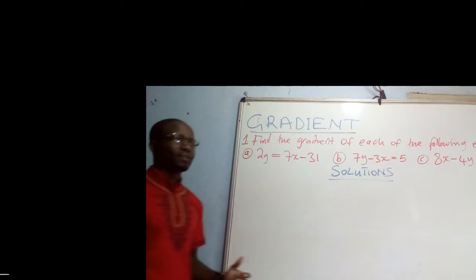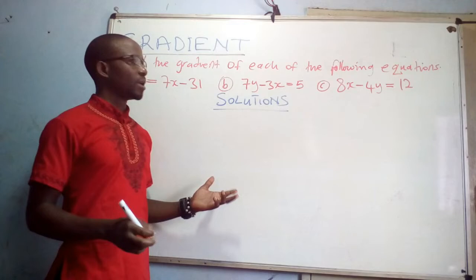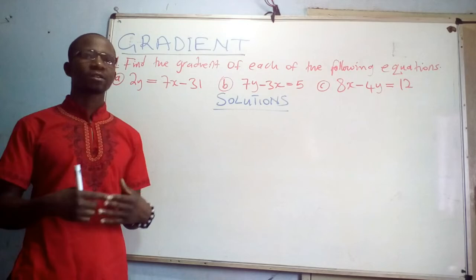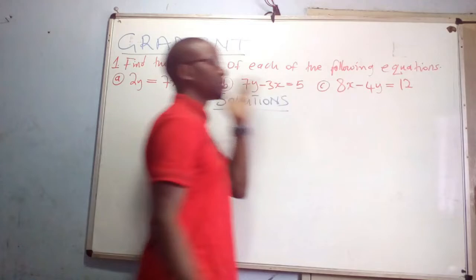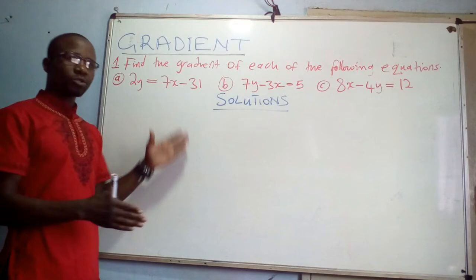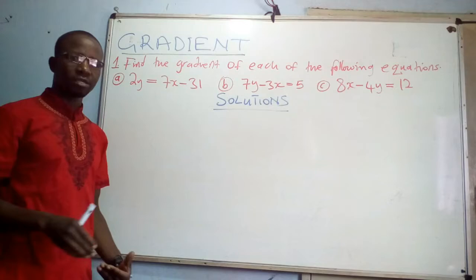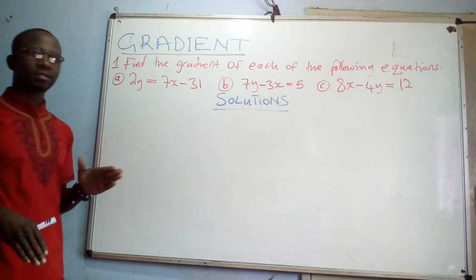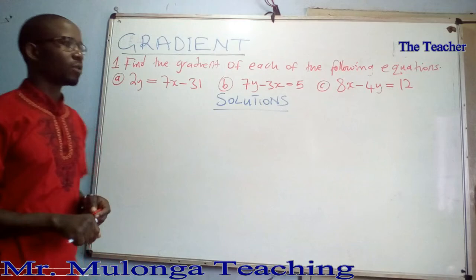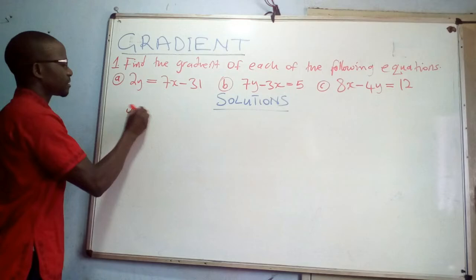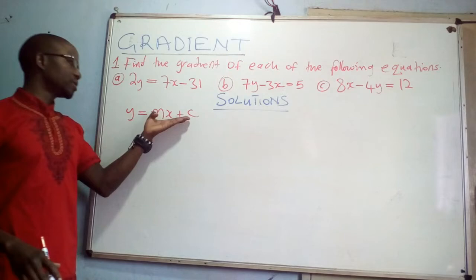In this lesson we are talking about the gradient of a straight line. The gradient in this case is going to be calculated from the equation of the straight line. We already have equations of straight lines — equation A, equation B, and equation C. Our task is to find the gradient for the straight line that produced each equation. For the general equation of a straight line, y = mx + c, m is the gradient.